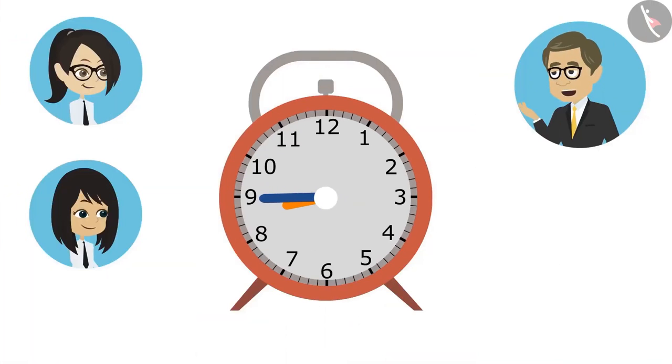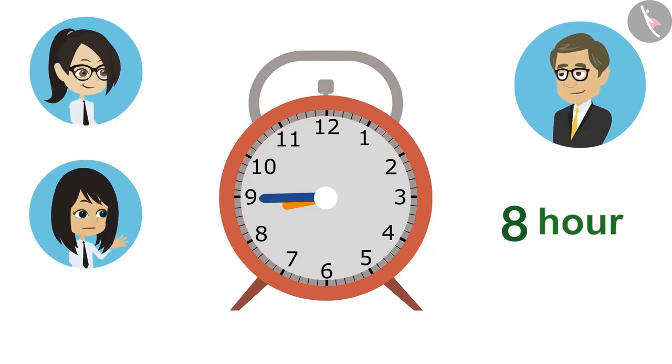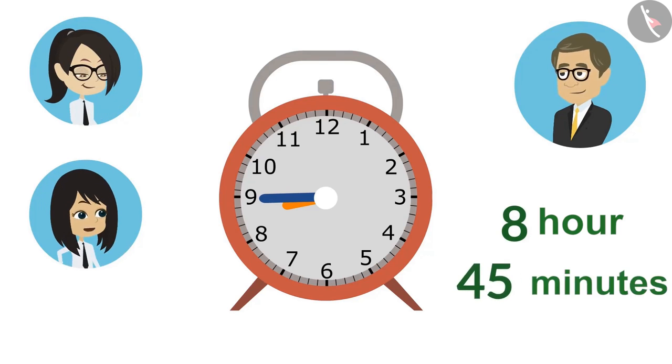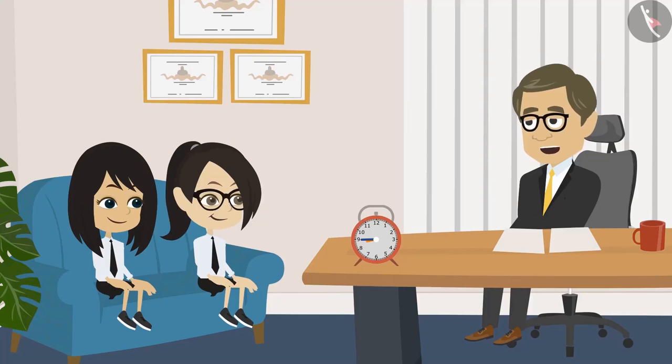Tell me, what is the time now? Sir, the hour hand is ahead of 8, which means it has been a few minutes past 8. Not few, but it is 45 minutes. That is, the complete time is 45 minutes past 8. Very good. Now you have answered correctly.